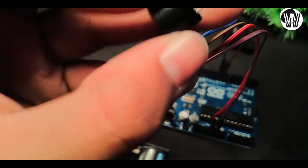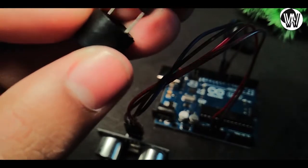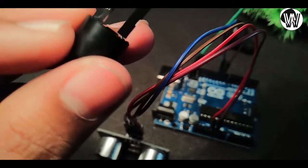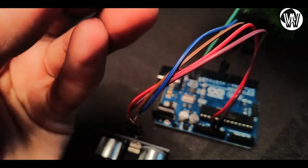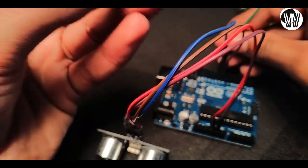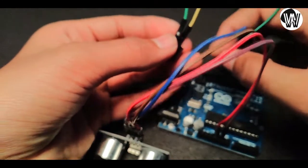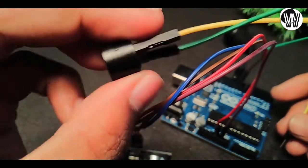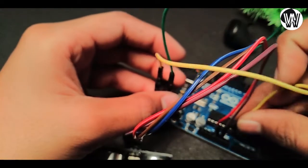Now take the 5-volt active buzzer and connect the jumper cables. Connect the positive wire of the active buzzer to digital pin 11 of the Arduino UNO board and the negative pin of the active buzzer to the ground pin of the Arduino UNO board.